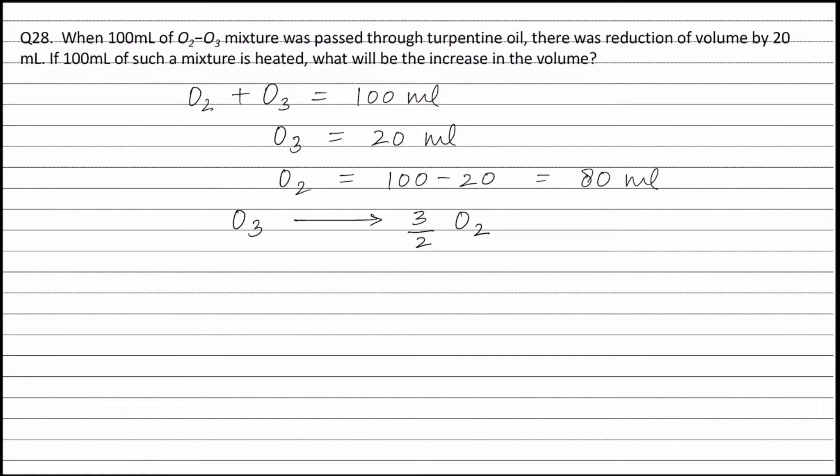Now, as can be seen from the balanced equation, 1 mol of ozone forms 3/2 moles of oxygen. Therefore, 20 moles of ozone will form 3/2 into 20 which is equal to 30 moles of oxygen.